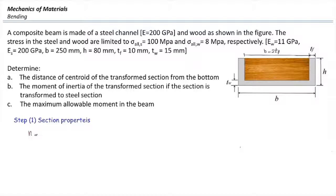The n-factor should be smaller than one: the modulus of elasticity of wood divided by steel. That would be 11 divided by 200, which is 0.055. Knowing that n-factor, we just need to multiply the width of the section by it. So the new width for wood would be n multiplied by the initial width, which is b minus 2tf — the thickness of the flange of the steel part on the side.